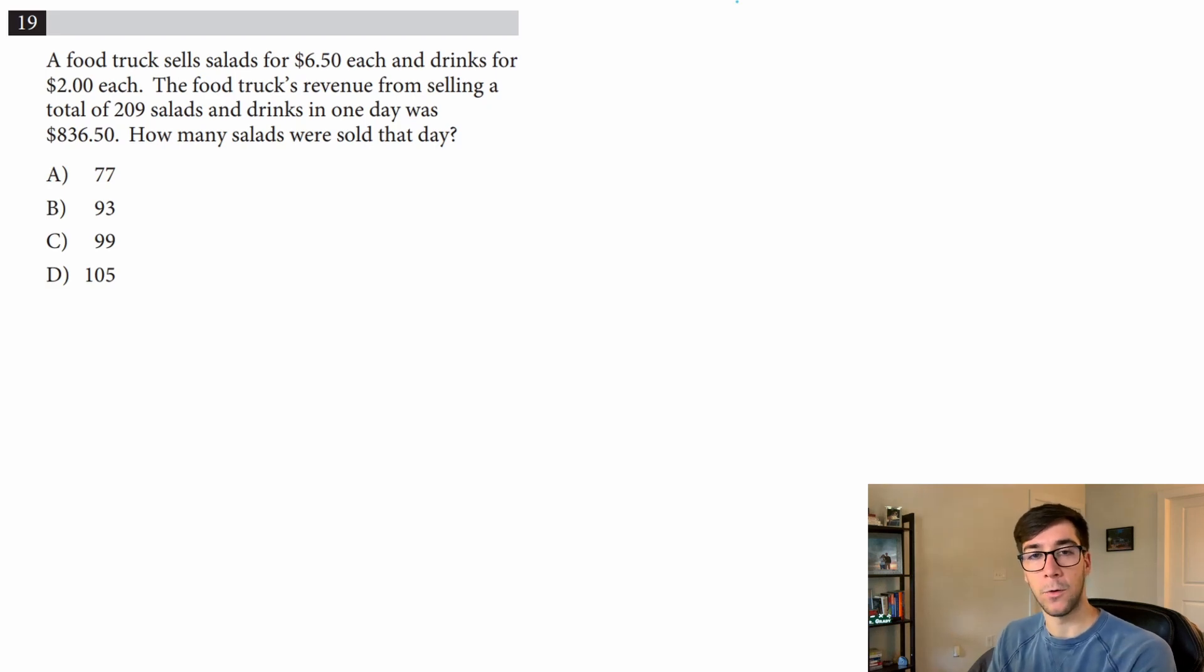Systems word problems are all about translating the words into equations, and if you know the types of equations you're going to see, they can be a lot easier. The two types of equations you'll usually see are some kind of measurement, in this case that's going to be money or dollars, and there's going to be a total amount.